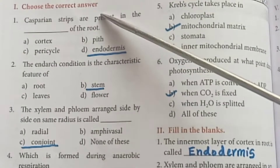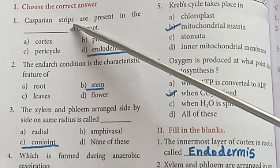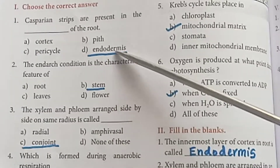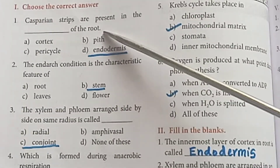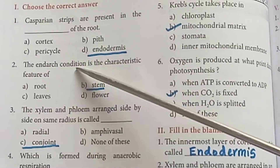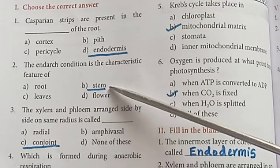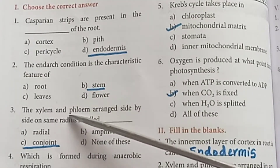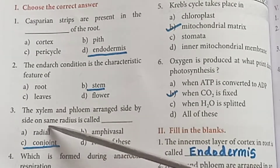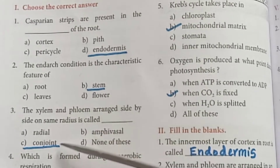From Part 1, choose the correct answer. Casparian strips are present in the endodermis of the root. The entire condition is the characteristic feature of the stem. The xylem and phloem arranged side by side on the same radius is called conjoint.